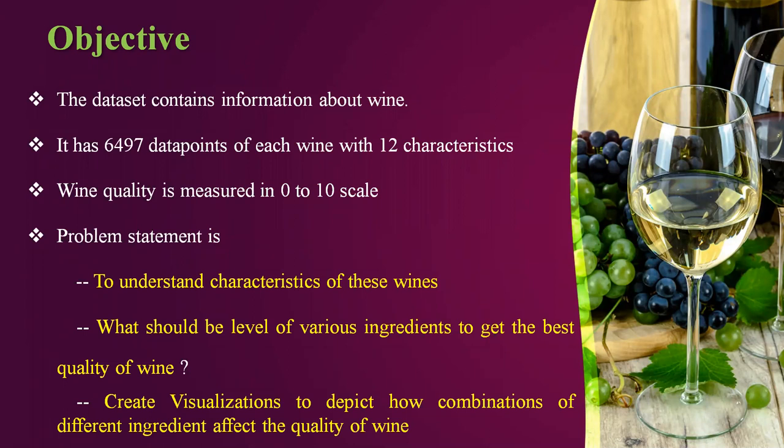The dataset contains information about wine. It has 6,497 data points of each wine with 12 characteristics and the wine quality is measured on a 0 to 10 scale. The problem statement here is to understand the characteristics of these wines, what should be the level of various ingredients to get the best quality of wine, and create visualizations to depict how combinations of different ingredients affect the quality of wine.